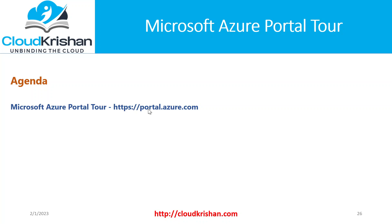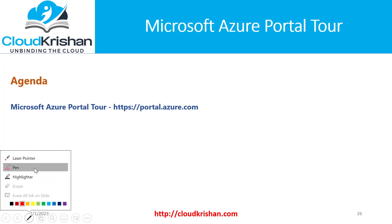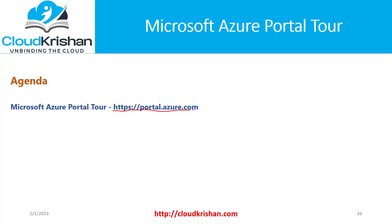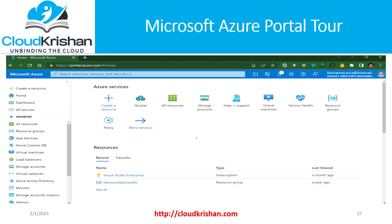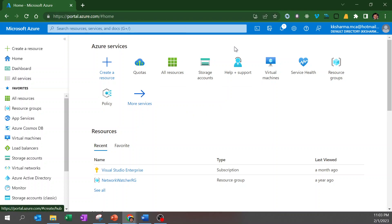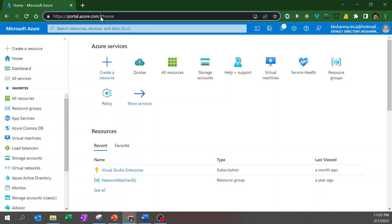The URL for Microsoft Azure portal is portal.azure.com. Let me highlight it — this is the URL portal.azure.com. This is my account; I just took a screenshot of my account. Let's open the Microsoft Azure portal. This is how it looks. I'm logged in with my account kksharma.mca.hotmail.com.